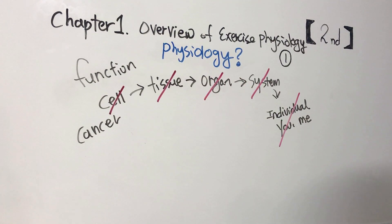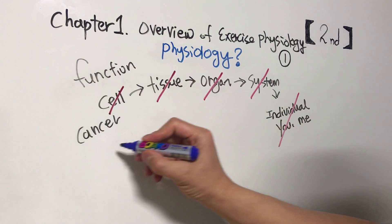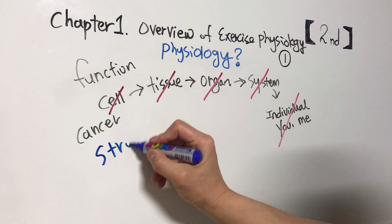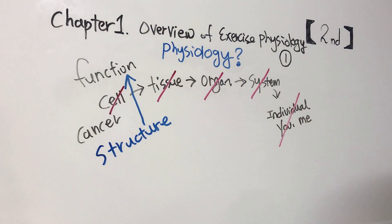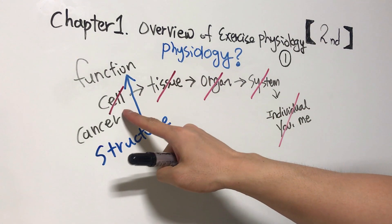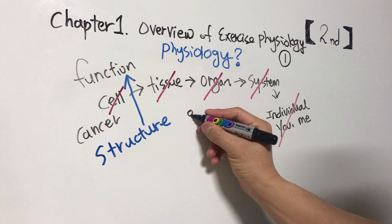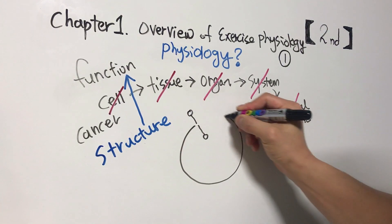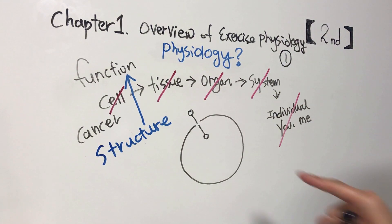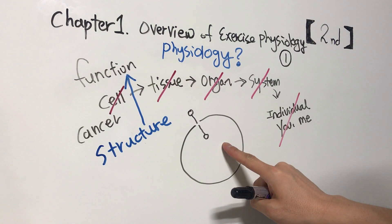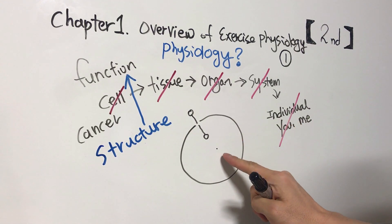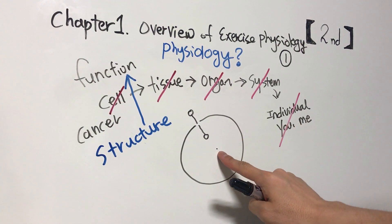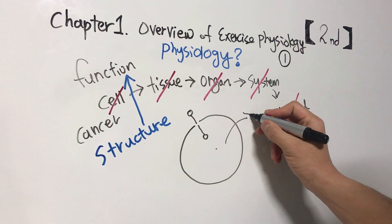One thing to say is structure is function. For example, cells have cell membrane, right? Double membrane like this. Membrane protects inside of cell, and they are also very important for substance exchange.